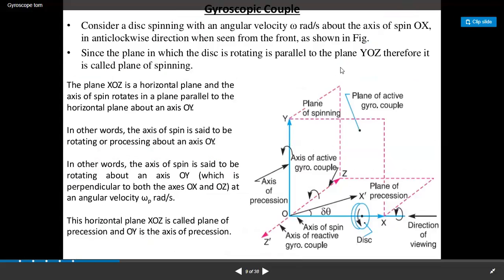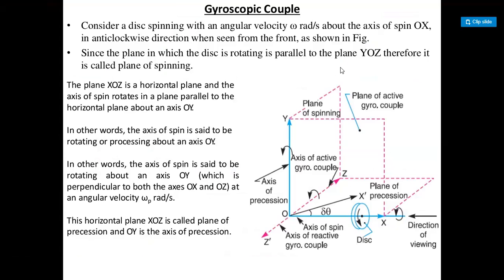Next is the gyroscopic couple. When the disk is spinning at its position and changes position, a gyroscopic effect is produced and gyroscopic acceleration is generated. Two components of velocity will be produced and the gyroscopic couple will be generated. Now let's learn how the gyroscopic couple is produced.